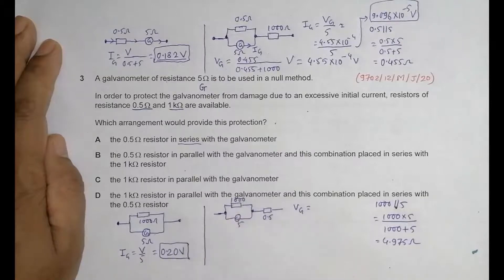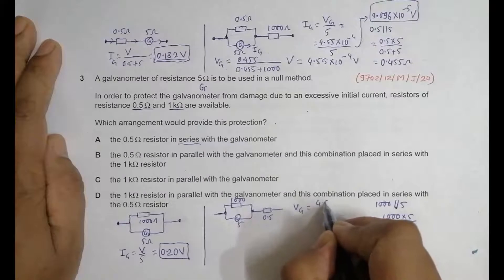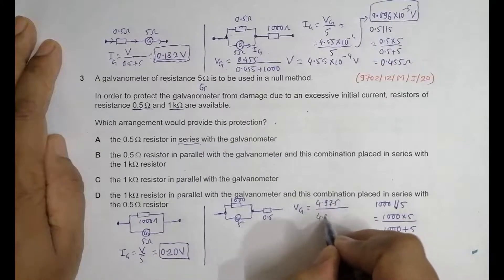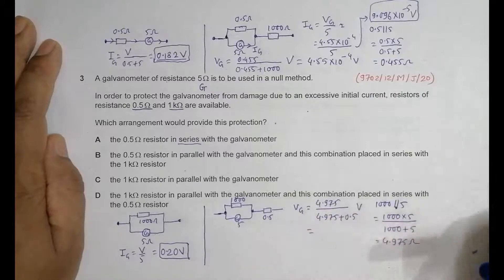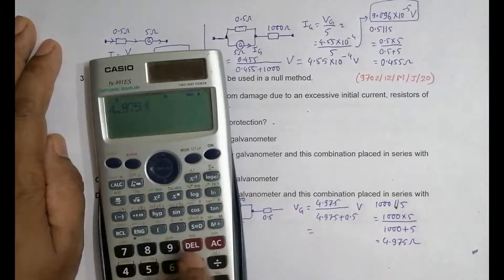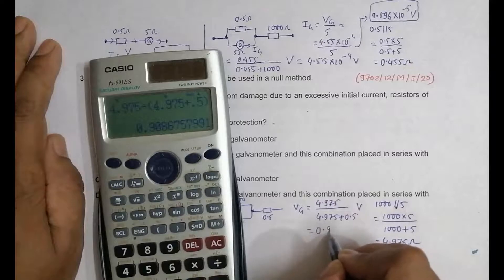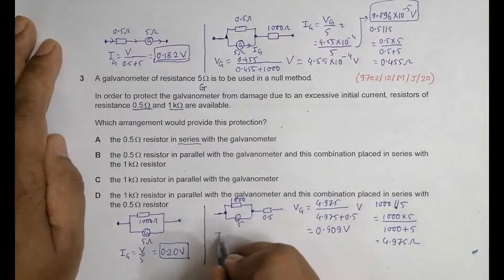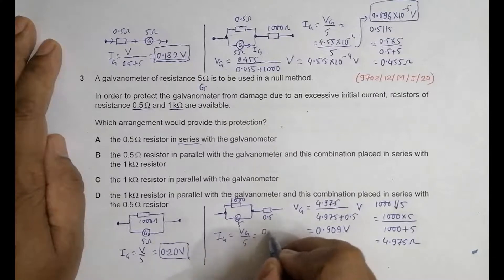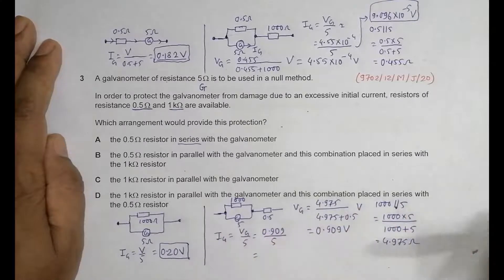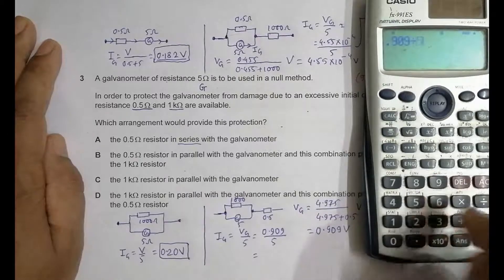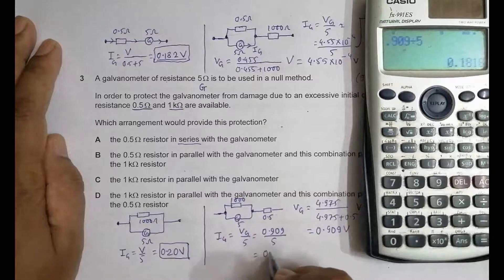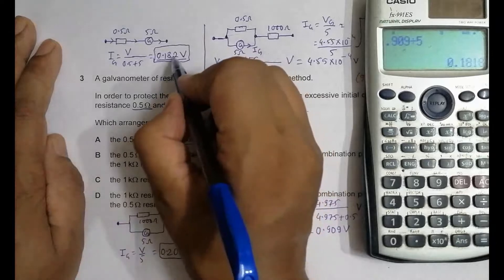Now VG equals (4.975 / (4.975 + 0.5)) × V = 4.975 / 5.475 × V = 0.909V. Then the galvanometer current IG = VG / 5 = 0.909 / 5 = 0.1818V. So for choice D the galvanometer current is 0.1818V.